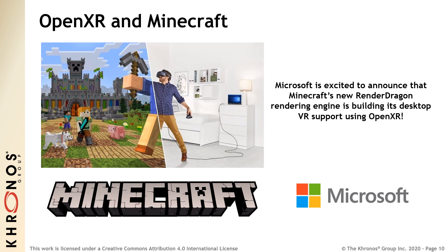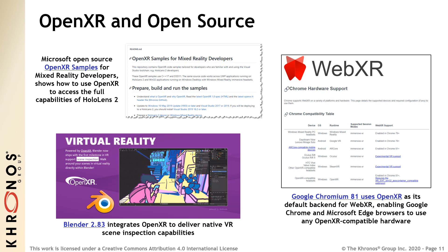Now let's look at some of the applications that are beginning to use OpenXR. In one of the first major gaming ports to OpenXR, Microsoft announced yesterday that the new RenderDragon rendering engine for Minecraft will use OpenXR to provide VR support across all OpenXR devices. The open source developer community is also actively using OpenXR. Microsoft has released samples into open source to illustrate how to use OpenXR on HoloLens 2. Blender, the popular open source 3D authoring tool, now uses OpenXR to enable 3D artists to use virtual reality to go inside and inspect their scenes. Also, the WebXR engine in Chromium, used to bring XR capabilities to the Chrome and Edge browsers, now uses OpenXR as its default backend to access XR devices.